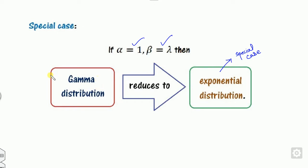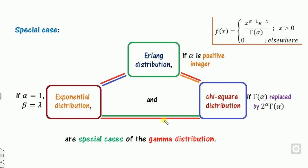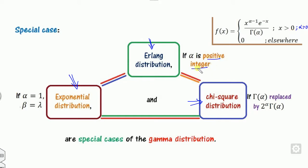That is why the gamma distribution has special importance. Apart from the exponential distribution, there is the Erlang distribution and the chi-squared distribution, both special cases of the gamma distribution. The Erlang distribution arises when alpha is restricted to positive integers only, rather than any positive real number.